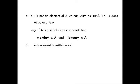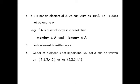One more property: while writing a set, each element is written only once. Another property: the order of elements does not matter. For example, if set A has elements {1, 2, 3, 4, 5}, you can also write it as {5, 2, 3, 4, 1} — the order doesn't matter while writing the set.